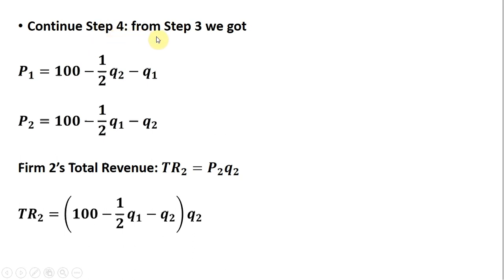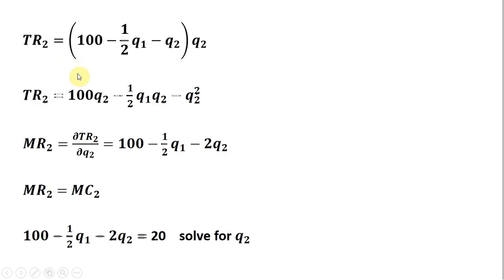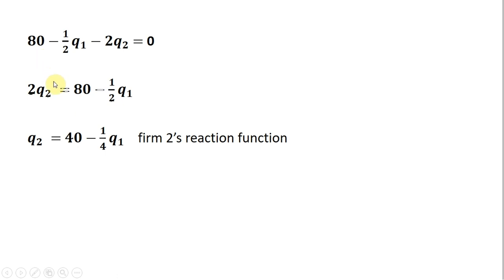Continuing Step 4 for Firm 2: from Step 3 we have the price equations. We construct Firm 2's total revenue as its price times its output, make the substitution, simplify, take the partial derivative, set marginal revenue equal to marginal cost, subtract 20 from both sides, add 2Q₂ to both sides, and divide through by 2. We have Firm 2's reaction function — the mirror image of Firm 1's.